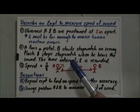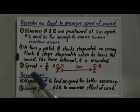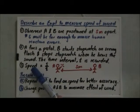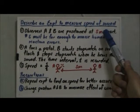And observer B will start the stopwatch on seeing the flash and stop the stopwatch when he hears the sound. The time interval T is recorded. So in this case, we can calculate the speed of sound in air by taking the S divided by T.